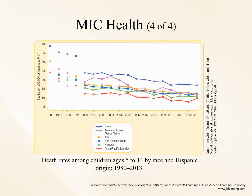Here are the death rates among children ages 5 to 14 by race and Hispanic origin. You can see that black children are at the top, Asian Pacific Islander at the bottom, and the average is in the middle.